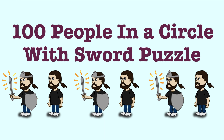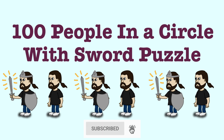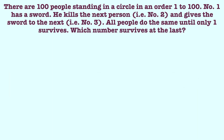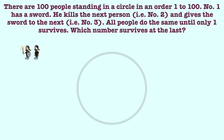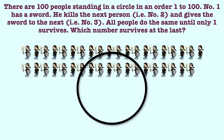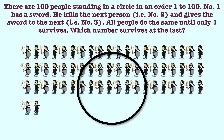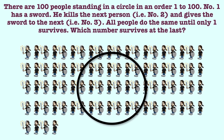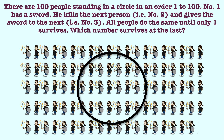What's up guys! In this video I am going to share one more interesting puzzle. There are 100 people standing in a circle in order from one to 100. Number one has a sword, he kills the next person — number two — and gives the sword to the next, number three. All people do the same until only one survives. Which number survives at the last?